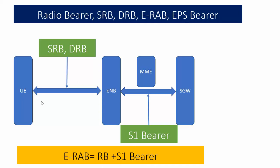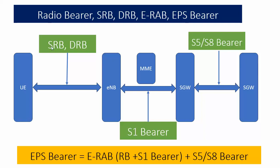If DRB is established and data connection is working, that means ERAB is already established. Now, the connection is already established between UE, eNodeB, and S-Gateway, but data may not flow yet because the P-Gateway provides the connection to the external network. After ERAB is established, the S-Gateway tries to communicate with the P-Gateway — the Packet Data Gateway.